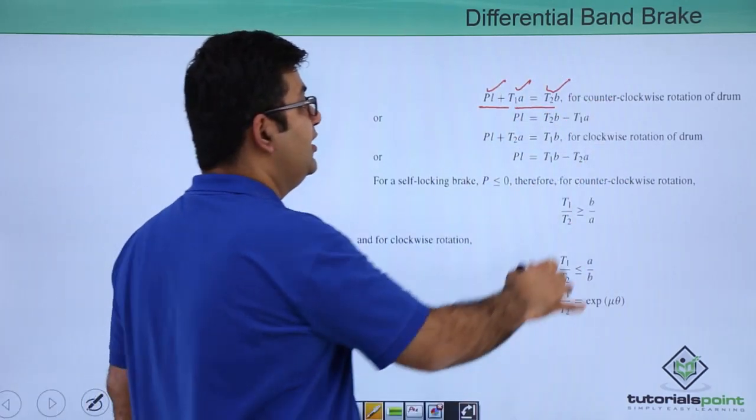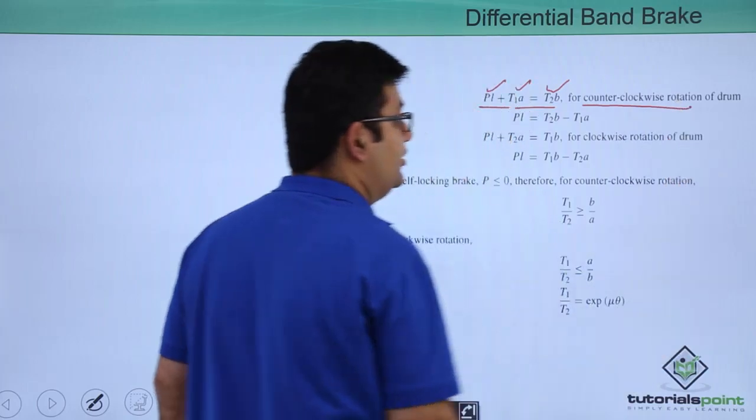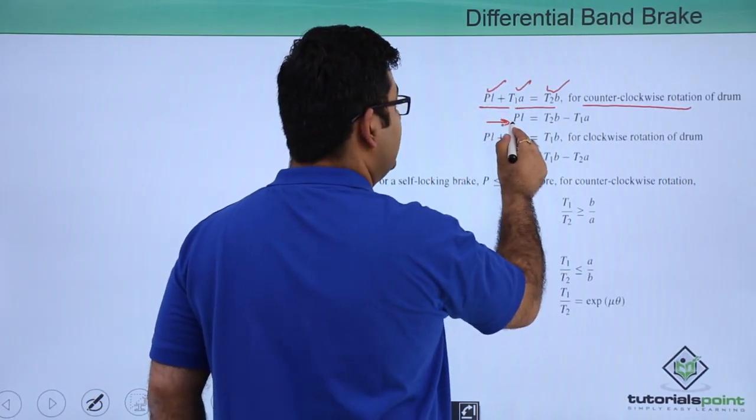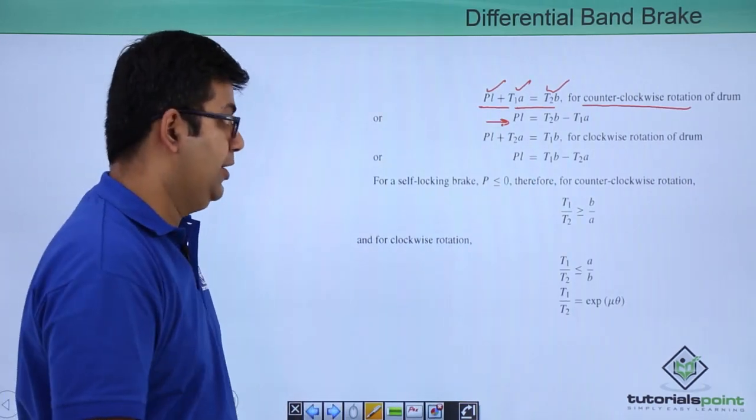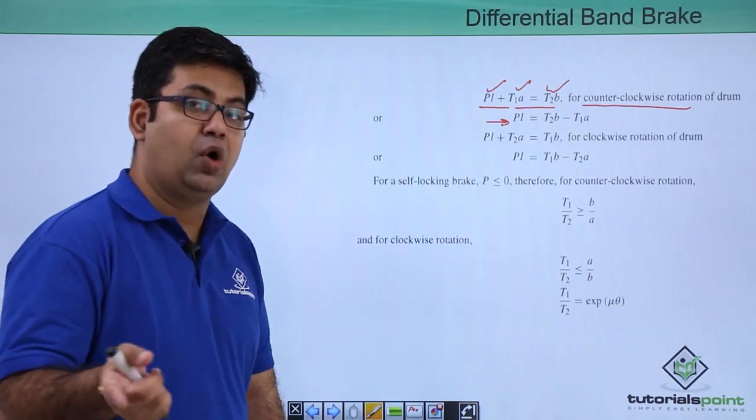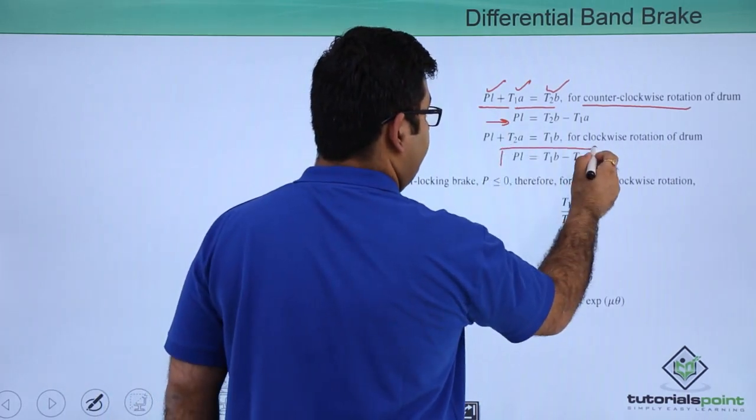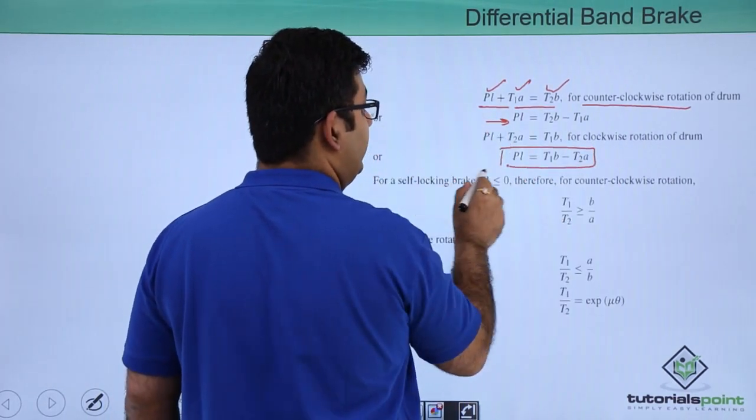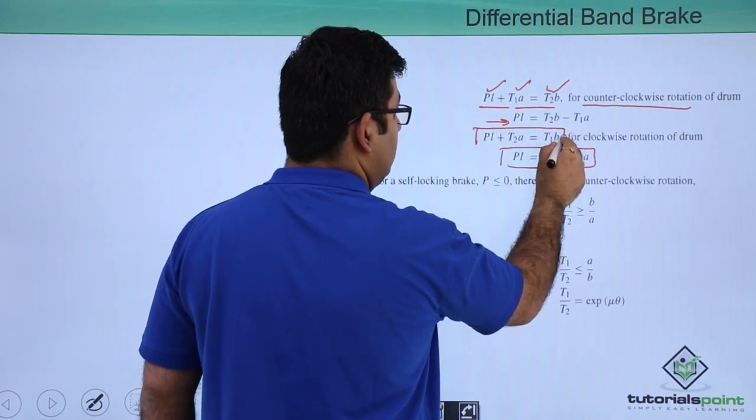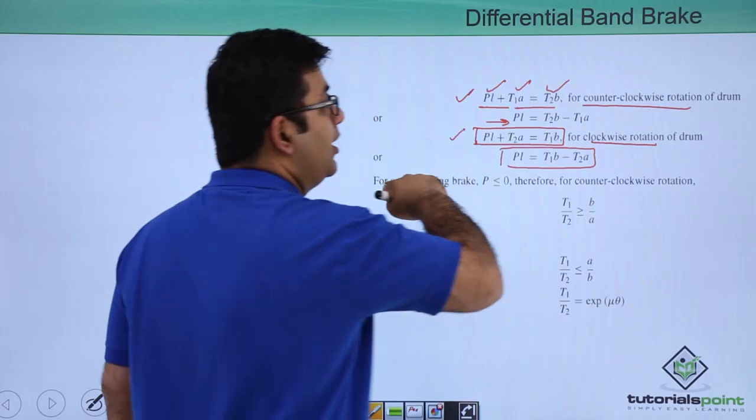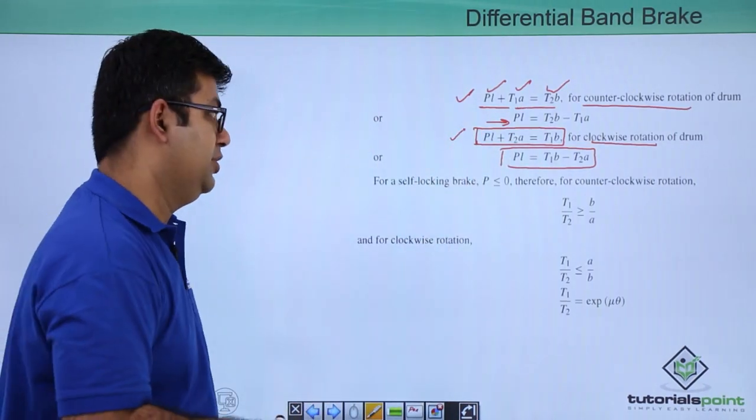This gives you the value for P*L, which is T2*B - T1*A. If it is in the clockwise direction, then it will become plus. Make a note of this—there is a difference between counter-clockwise rotation and clockwise rotation.